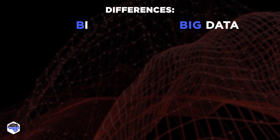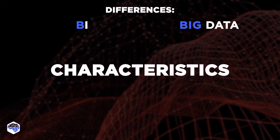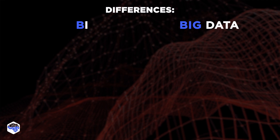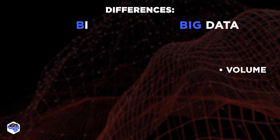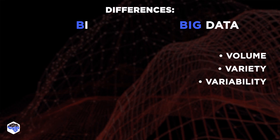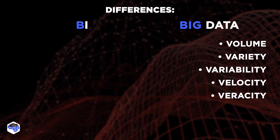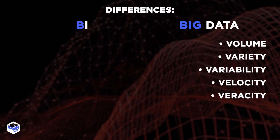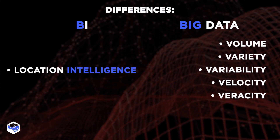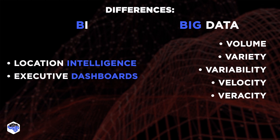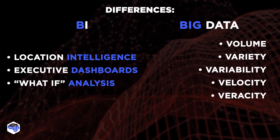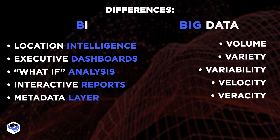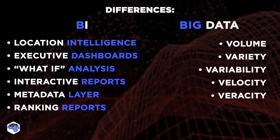They also differ by their characteristics and properties. Big data can be described by characteristics such as volume, variety, variability, velocity, and veracity, while business intelligence has the following features: location intelligence, executive dashboards, what-if analysis, interactive reports, metrics, metadata layer, and ranking reports.